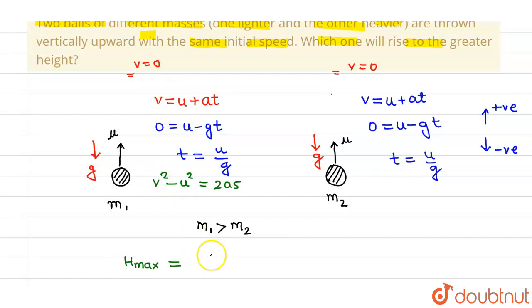So this is minus u square divided by minus 2g. So negative negative will cancel out, so ultimately we are having maximum height as u square by 2g.